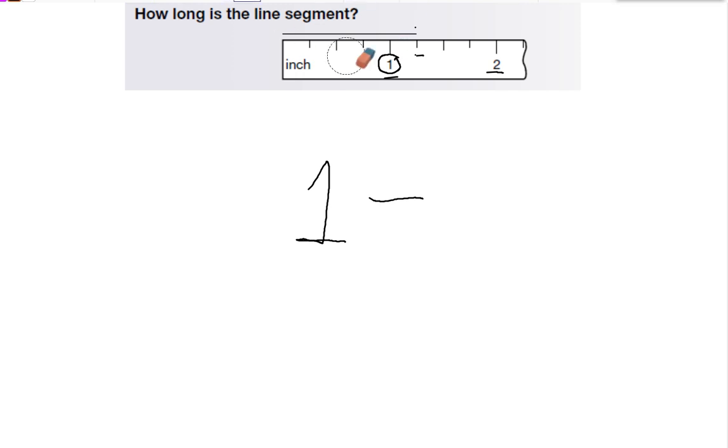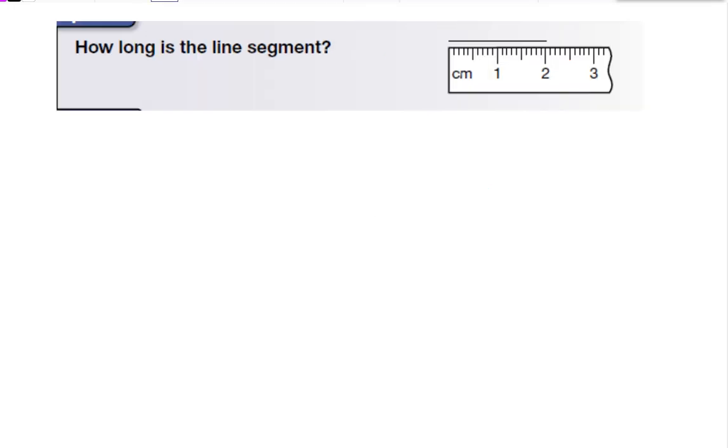So, it looks like this. We count 1, 2, 3, 4. There are 4 marks between the 1 and the 2, so my denominator will be 4. The segment goes to the first mark, so that means it would be 1 4th. This line is 1 and 1 4th inches long. Okay?